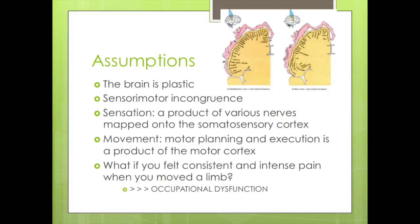The next assumption is sensory-motor incongruence. In this theory, it is believed that a disconnect exists between sensory and motor pathways, and that could be the cause of pain. The next assumption is that sensation occurs via nerve input that is mapped onto the somatosensory cortex. A variety of nerve classes exist throughout the skin, joints, muscles, and tissue that interact with the sensory cortex to give a concept of internal and external feeling. Pain is interpreted through the sensory cortex via the nerve endings.